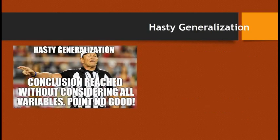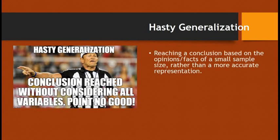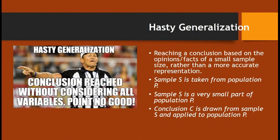Hasty generalization — there's actually an entire meme series of the logical fallacy ref. Hasty generalization: conclusion reached without considering all variables. You're looking at a small sample rather than a more accurate representation, cherry-picking examples to reach a large conclusion. Sample S is taken from population P; sample S is a very small part of population P; the conclusion is drawn from the sample and applied to the whole population. For example, if I talk to three U High freshmen who are the biggest go-getters about getting their homework done on time, they're clearly getting it done. So I make a hasty generalization that U High students are excellent about completing their homework — when if you talk to the student body as a whole, that's probably not always true.